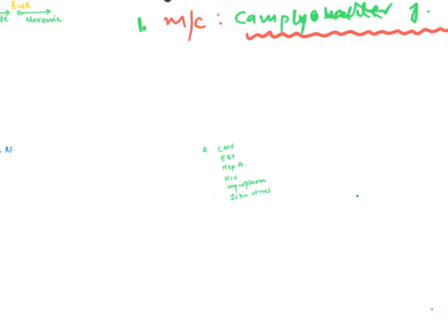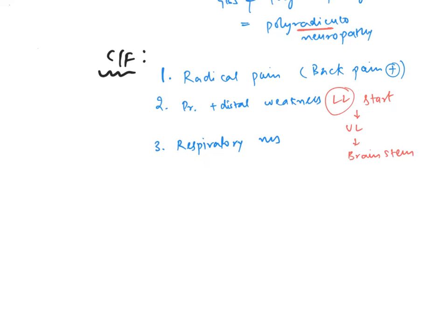The fourth point is ANS symptoms, also called dysautonomia. This includes hypertension, hypotension, bradycardia, urinary incontinence. All these ANS symptoms lead to dysautonomia, which can cause death through respiratory muscle failure.